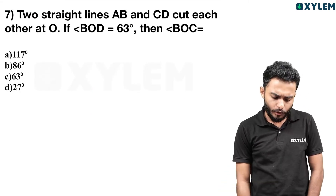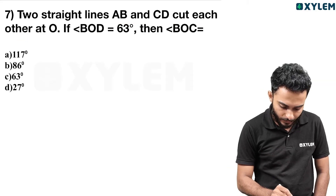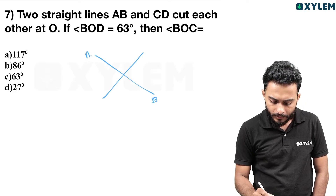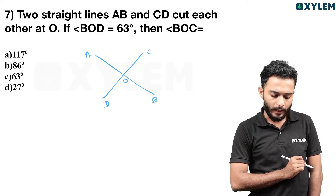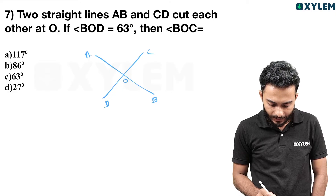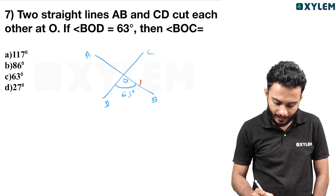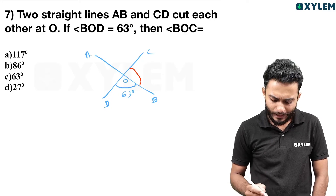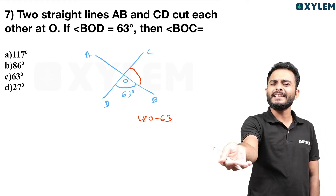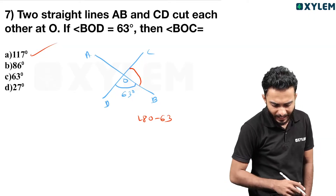7th question. Two straight lines A, B and C, D cut each other at O. If angle BOD equals 63 degrees, since BOD and AOD form a linear pair: 180 minus 63 equals 117 degrees. 7th question, option A, 117.